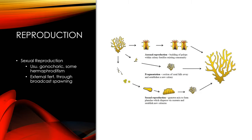Sexual reproduction is possible as well. Some cnidarians are gonochoristic, meaning two specific sexes, while some are hermaphroditic — not always transitioning between sexes, but able to release either egg or sperm gametes. External fertilization through broadcast spawning is the main method, and can be done as an individual or in large groups where billions of gametes are released into the water.